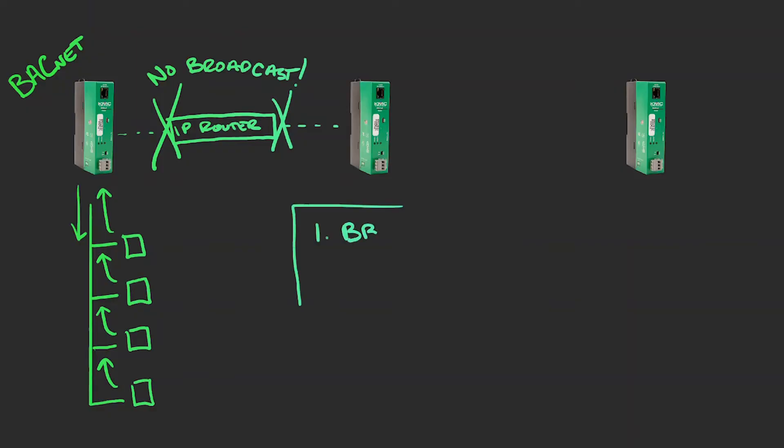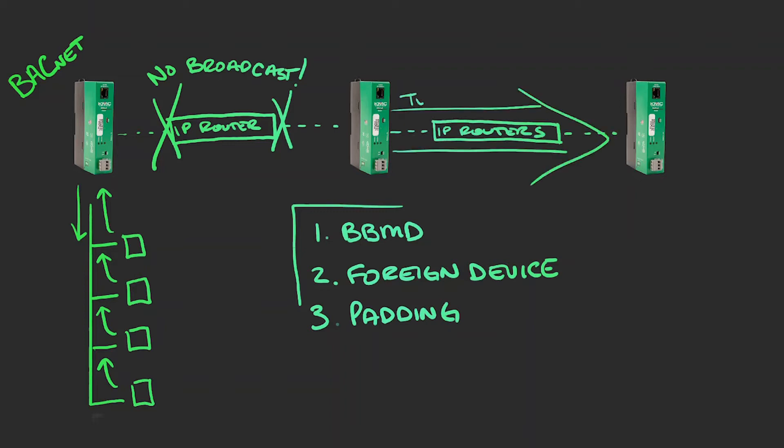There are three ways to configure a BACnet router to work around this issue: BBMD, foreign device, and padding. In all three methods, BACnet routers encapsulate broadcast messages into unicast messages that IP routers will forward. This concept is called tunneling and has been done in the IT networking world for decades. There are many IP protocols that use a tunneling method to get from here to there on different subnets.